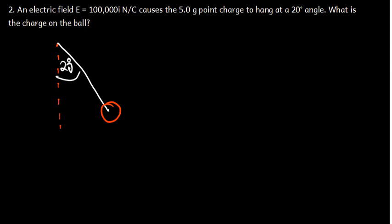Here is our charge. We don't know whether it is positive or negative. The mass of this charge is 5 grams. We know that it is under the influence of gravity — it is hanging. When something is hanging, the force present is the tension force, FT. Since it is in free-form motion, it is also under the influence of gravity, so we have mg. We are also going to have what we call the electric force.